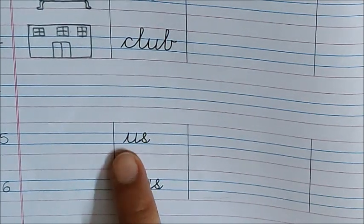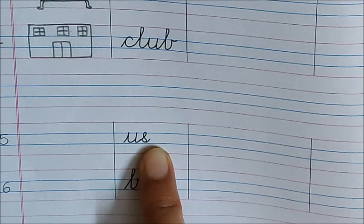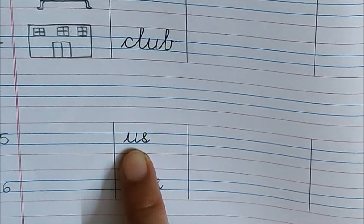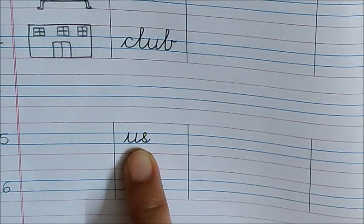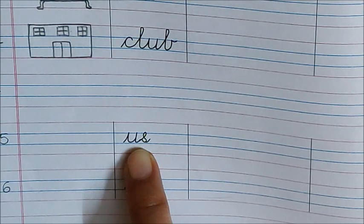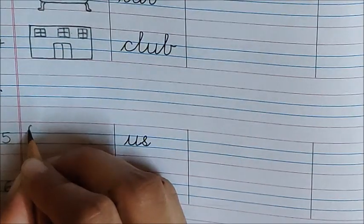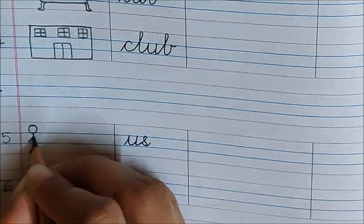Now let us read the next word. U, S, us. Us means hum sab. When I am talking about myself, I will just say I. But if there is one more person with me, or maybe two, three, four, five, six, many persons with me, then I will say us. When you are talking about us, then we will say us.